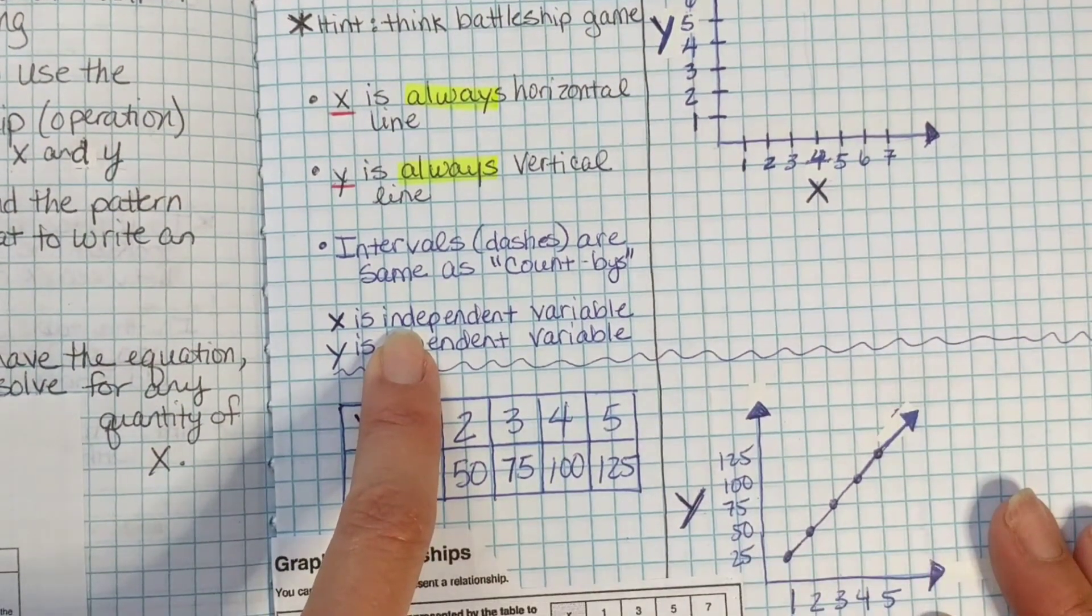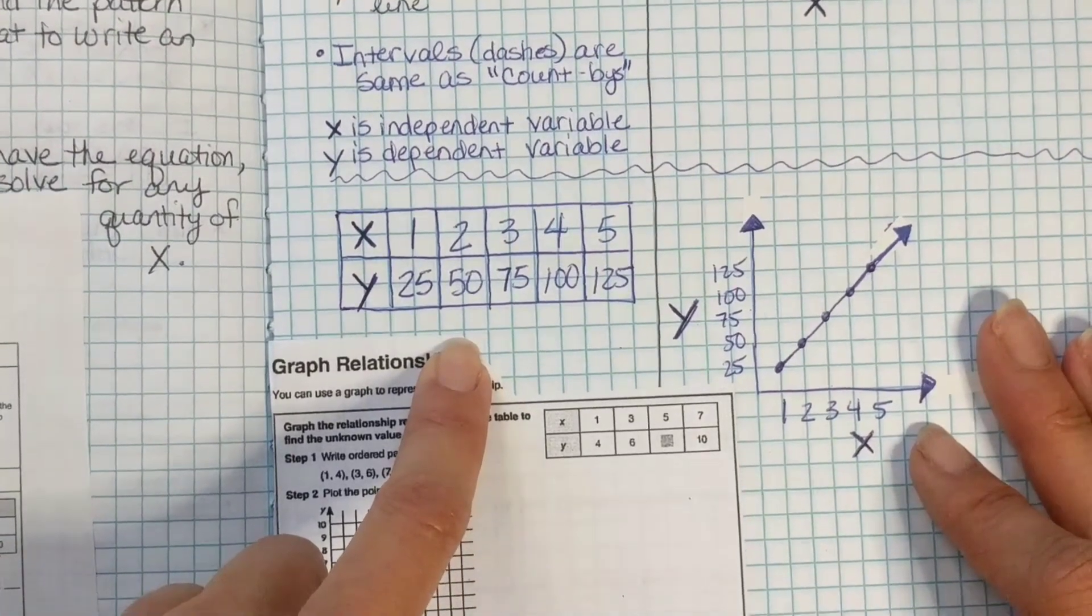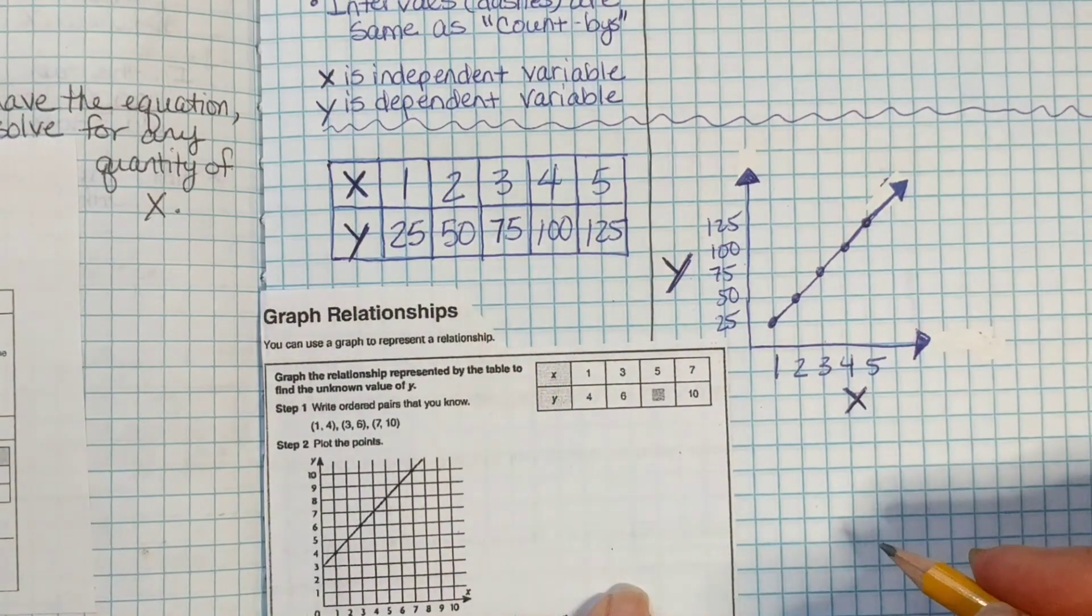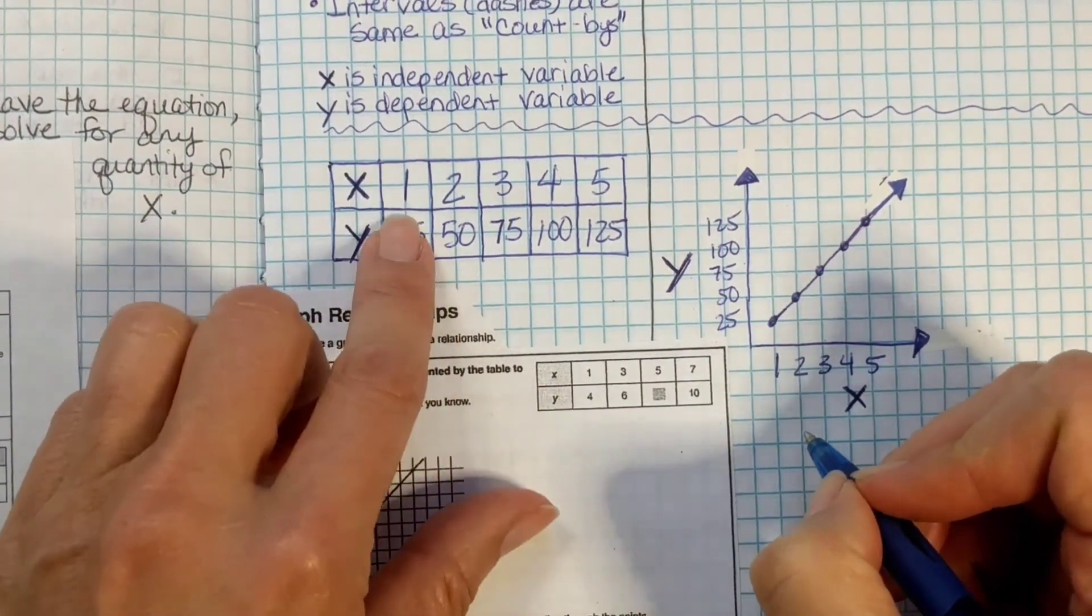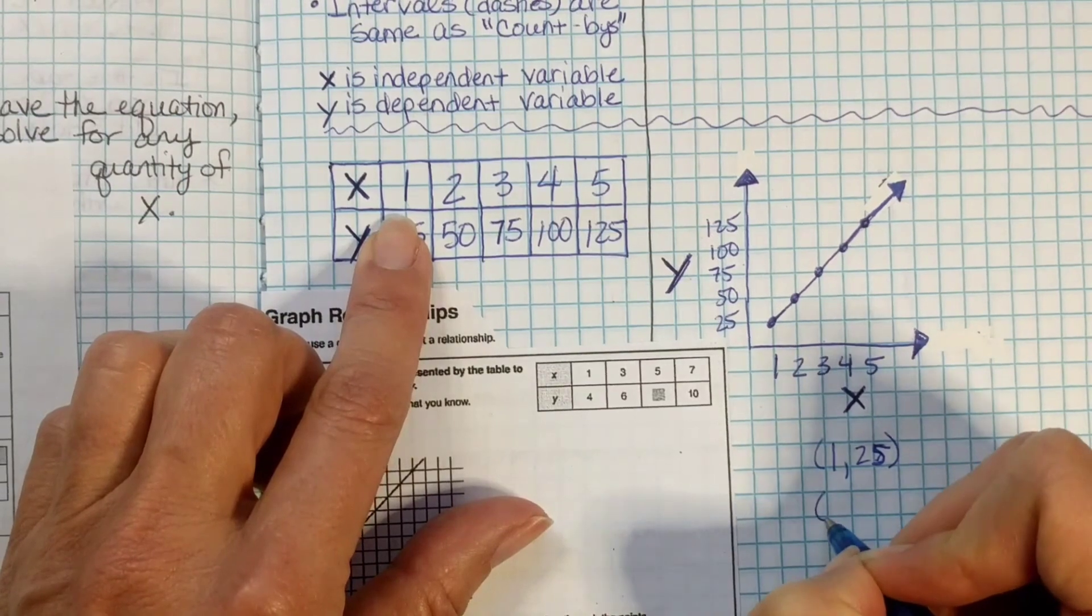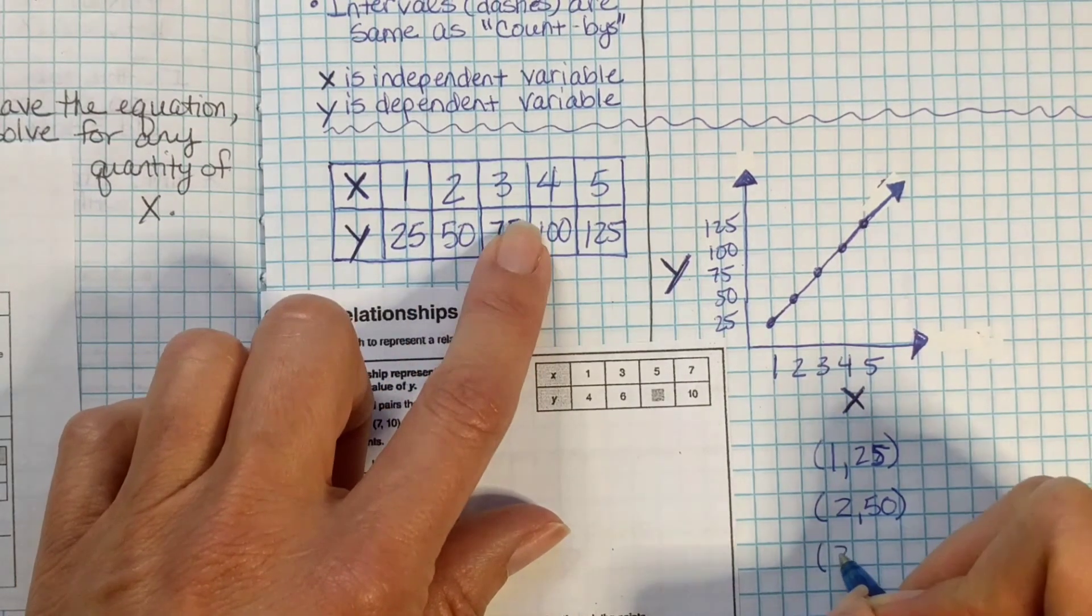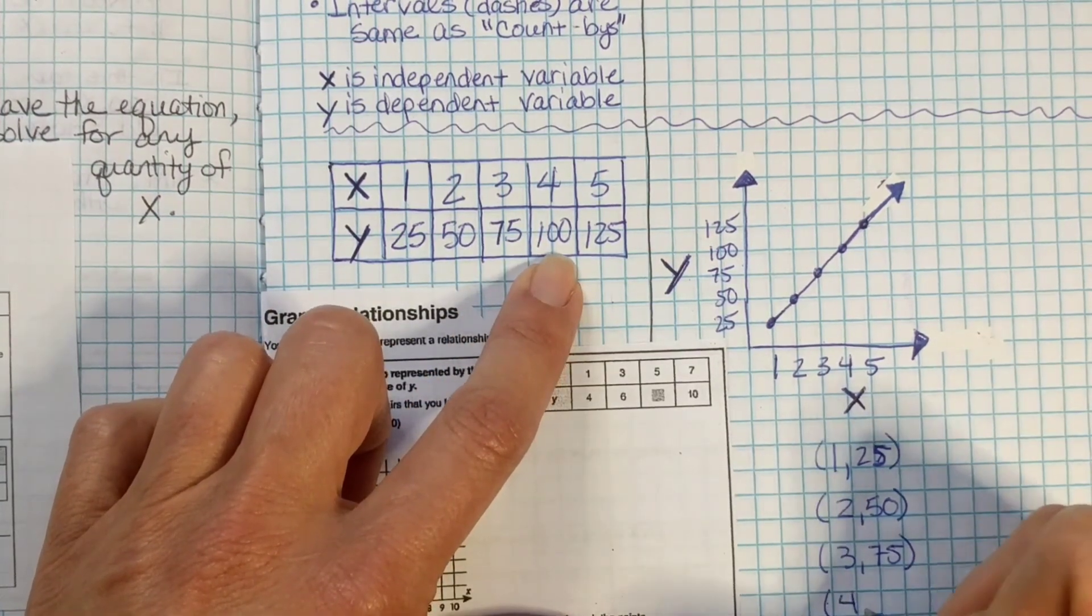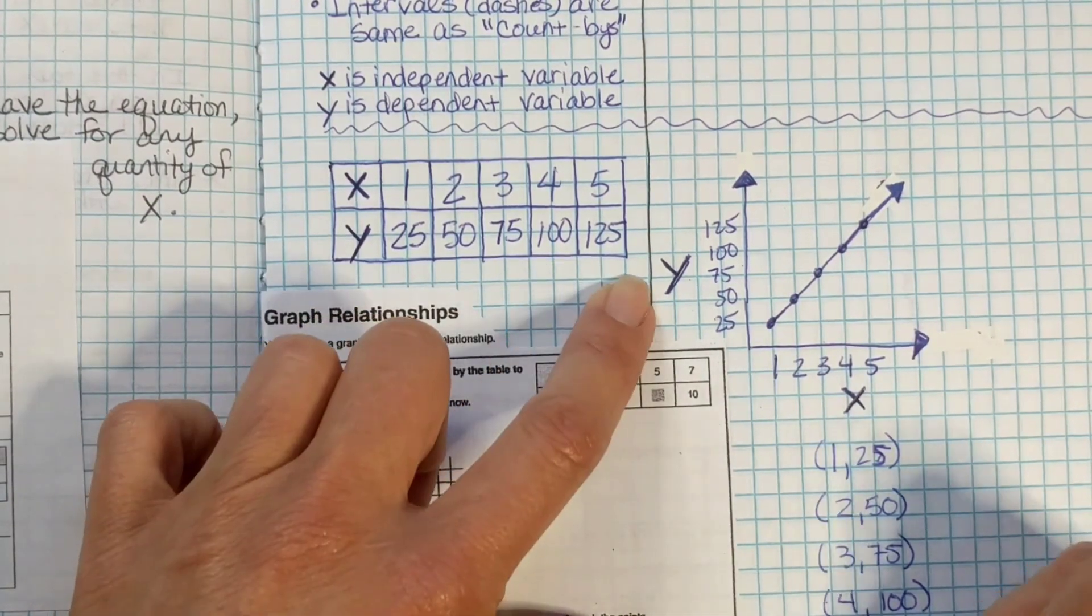X is the independent variable. Y is the dependent variable. If they give us a table, if they give us a table and a problem, that makes it really easy to graph. All we have to do is make our ordered pairs, which are here. Let's go ahead and write them out. Our ordered pairs are 1, 25, 2, 50, 3, 75, 4, 100, and I'm going to squeeze this last one in here, 5, 125.